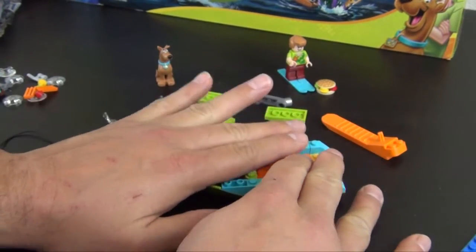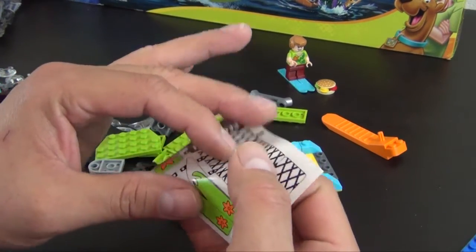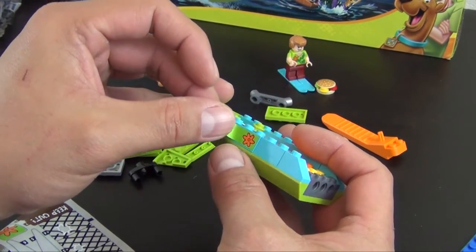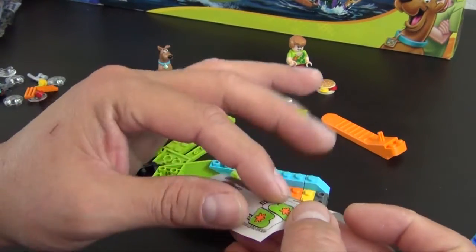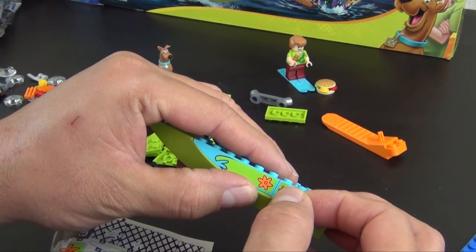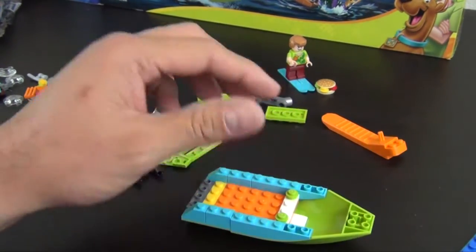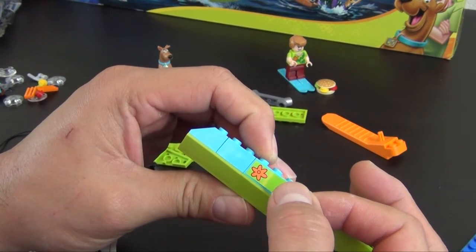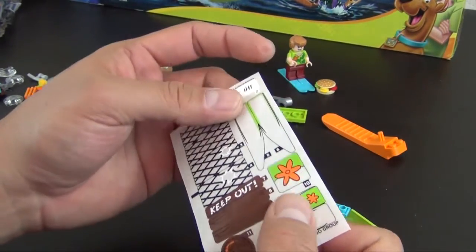Alright, so we have the beginnings of the boat and now we're going to sticker it up. We'll start with sticker number five. It goes there. Sticker 13. Turn it around, sticker number six, and lastly we have sticker number 12.